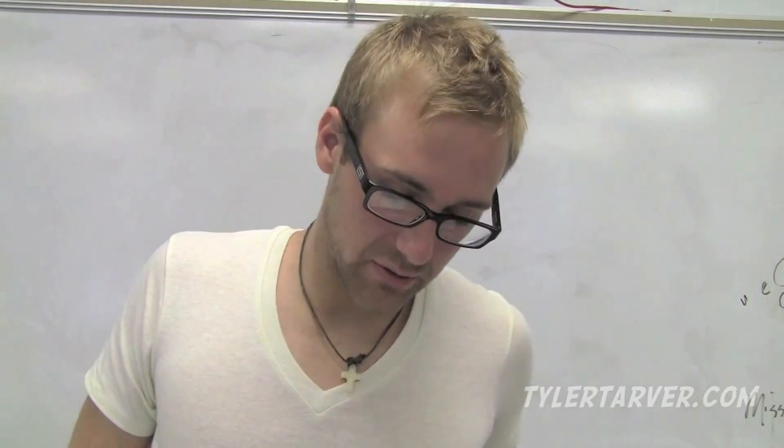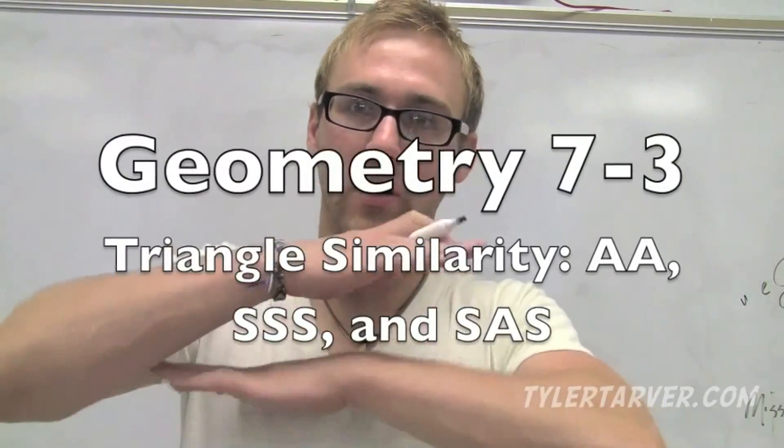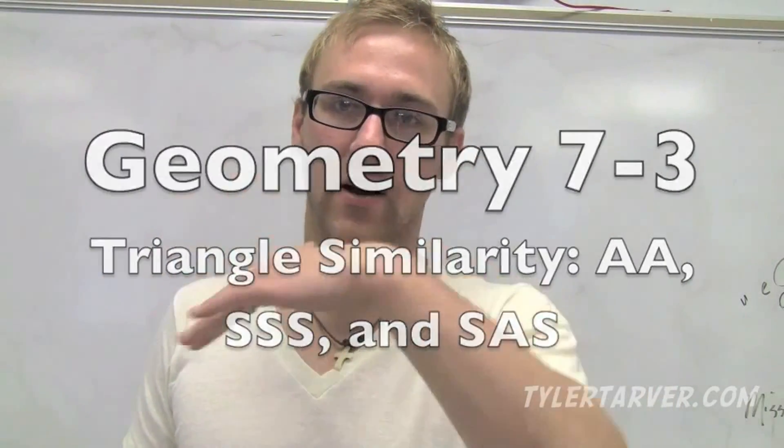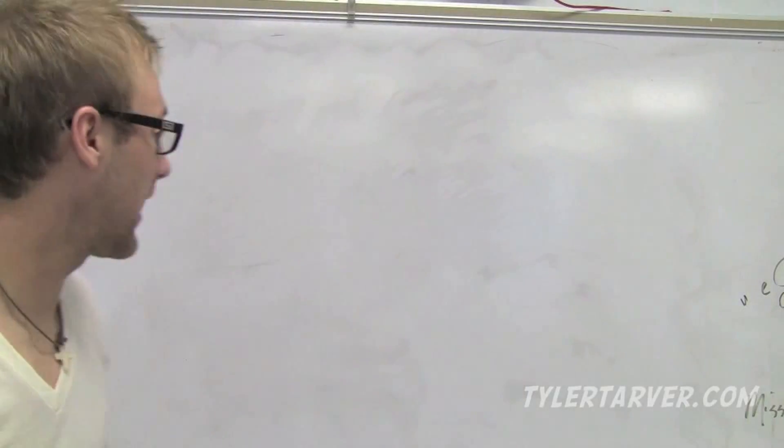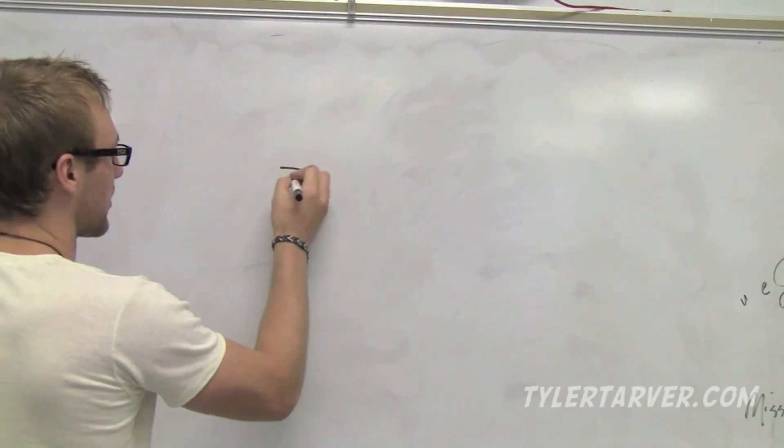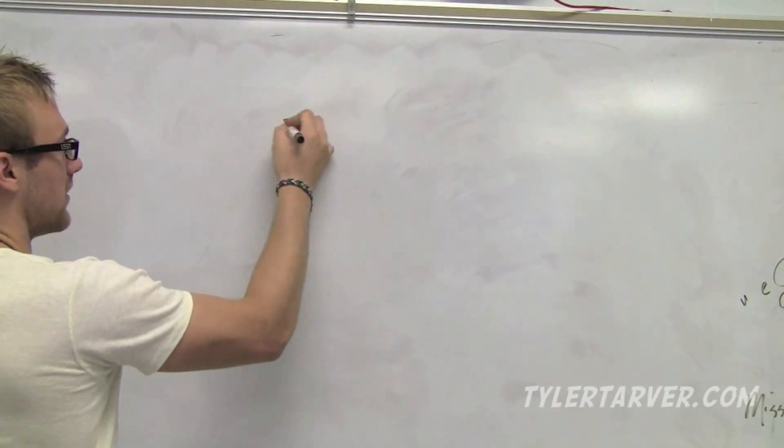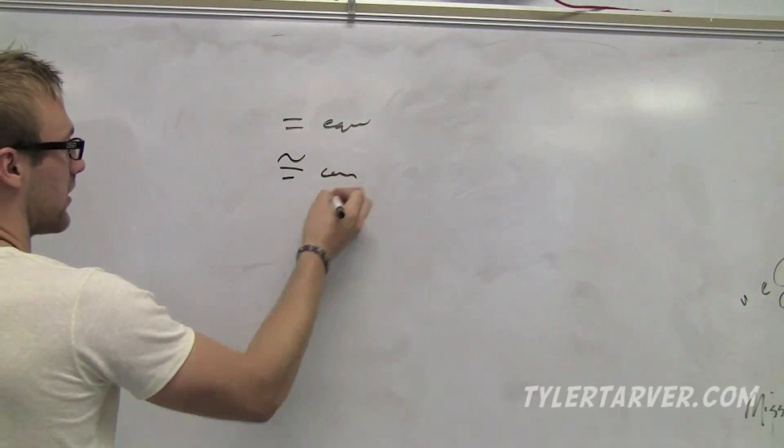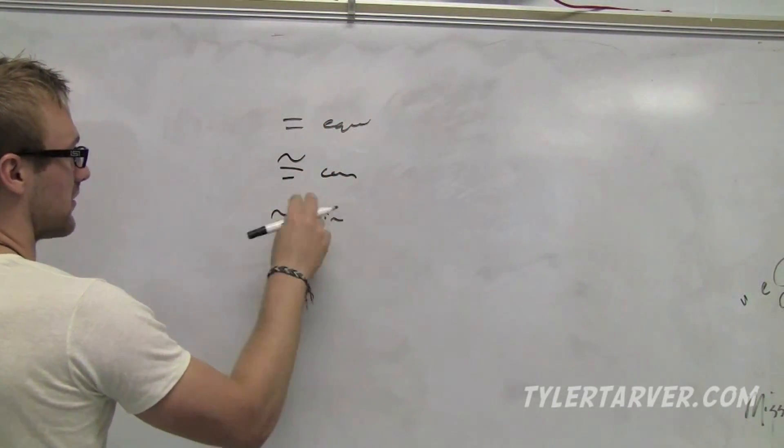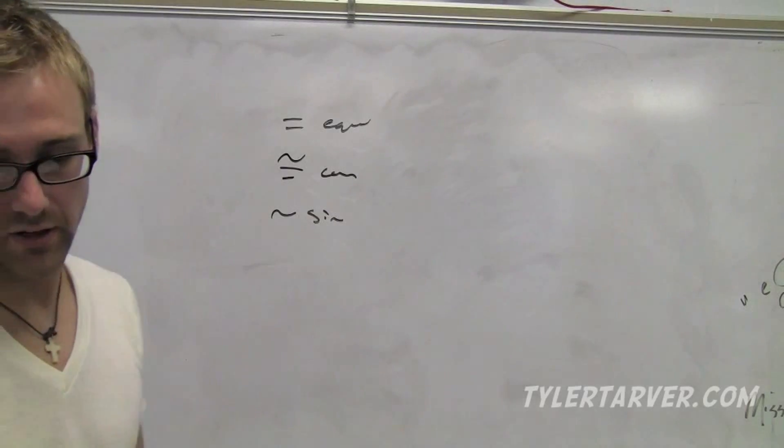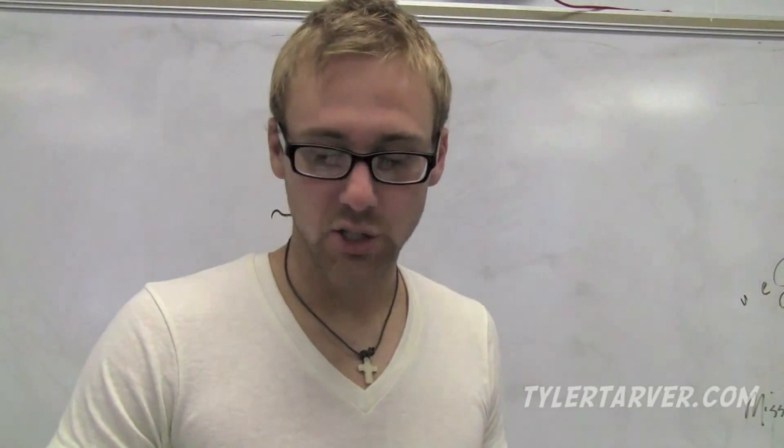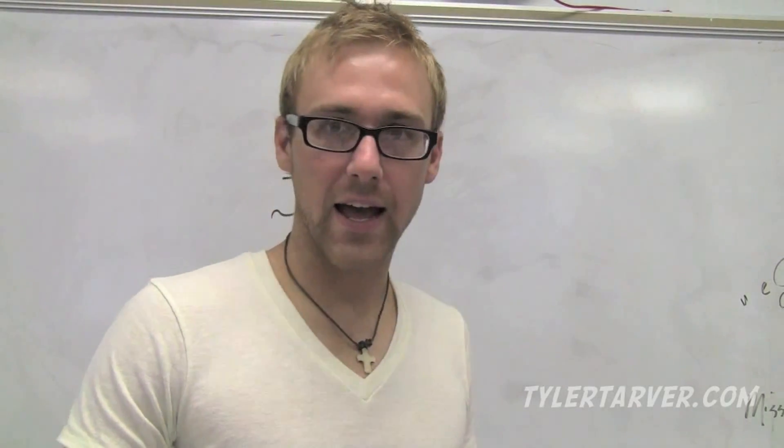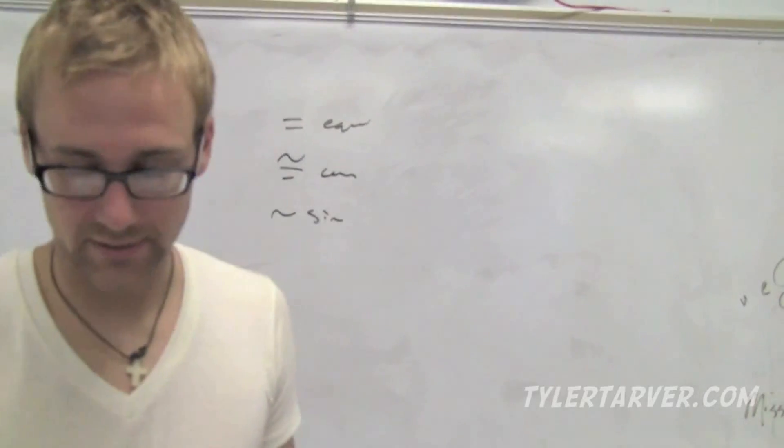Alright, this next one is going to be a quick review because we did most of this when we talked about triangle congruence theorems. Now we're just talking about similarity theorems. Here's the signs - equals, that's equal. That's congruent. Similar is similar. We're doing 7-3, triangle similarity: AA, SSS, and SAS.